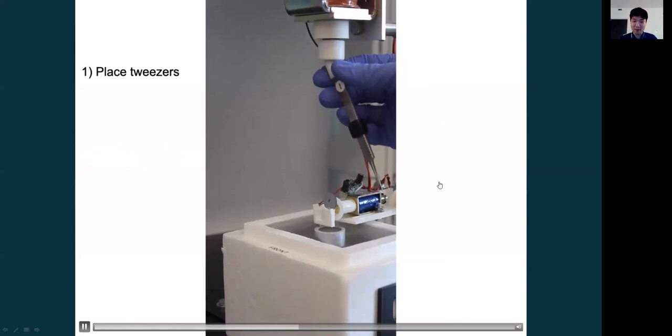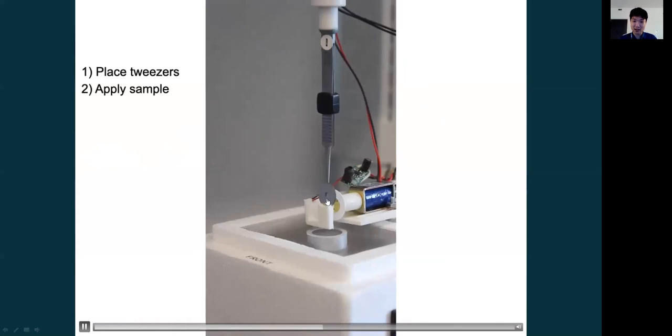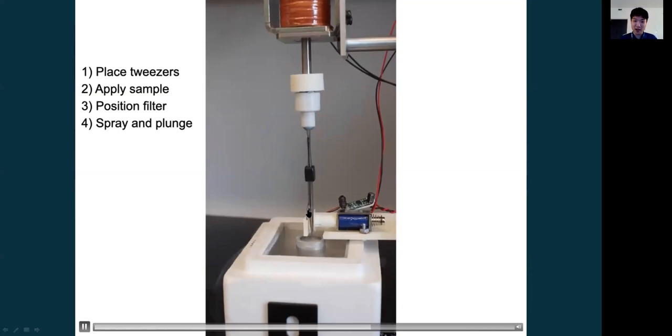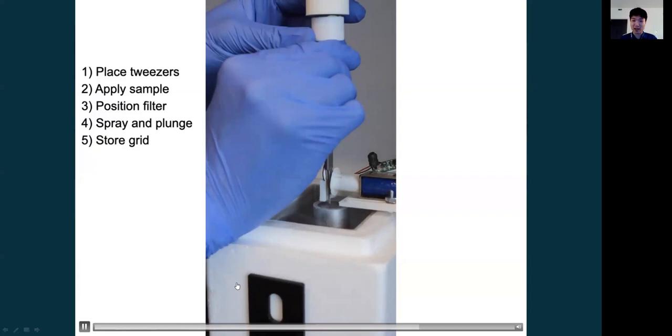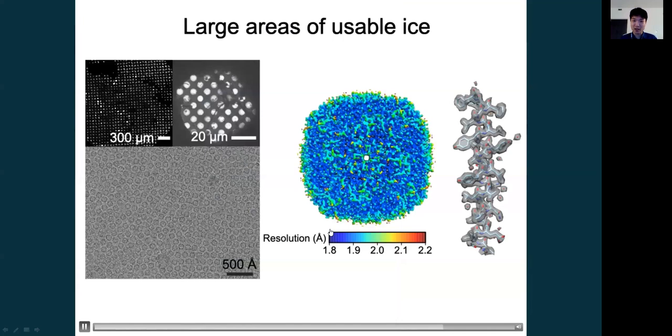And to actually use the device, what we do is we place the tweezers over here, the filter paper is behind it, the piezo with the sample will be in front of it, and your liquid is applied to the back of the piezo. Your filter paper is now pushed against the grid, and then after sample application, the grid can be plunged straight into the liquid ethane with a short distance to allow for high-speed time-resolved experiments if required. And then afterwards, you can store your grid in your grid box or image it in a microscope.